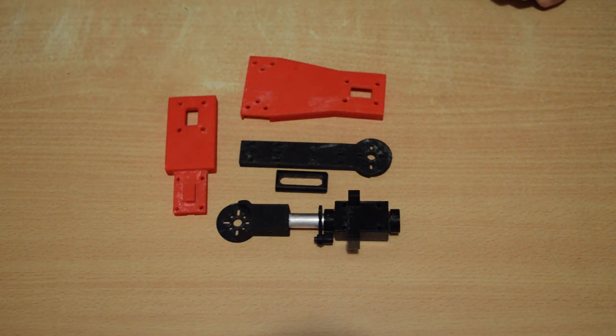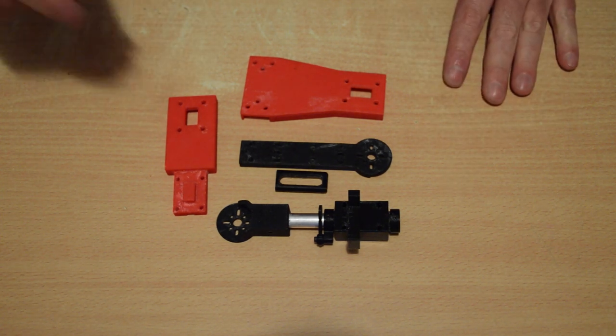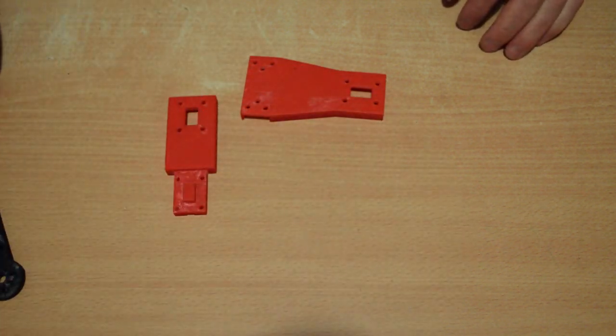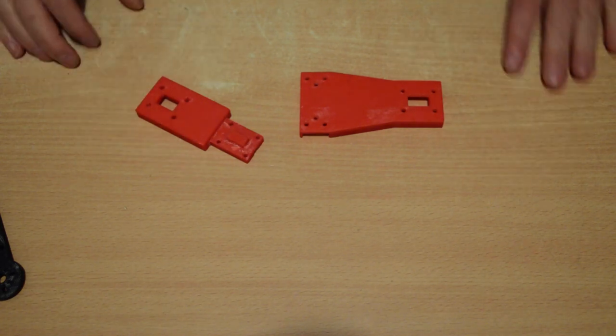I'll get to the servo as I get to that part of the build. So, how do we put this together? First of all, I'm going to ignore everything that's black and concentrate on the two red bits.